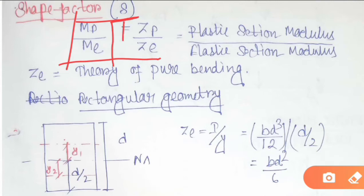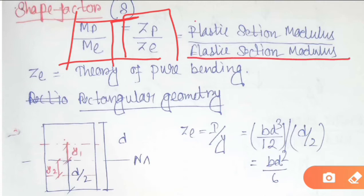Shape factor can also be defined as the ratio of plastic section modulus to elastic section modulus. So shape factor is either the ratio of plastic moment to elastic moment, or plastic section modulus to elastic section modulus, as you can see in the diagram.